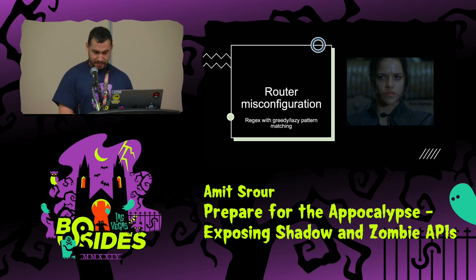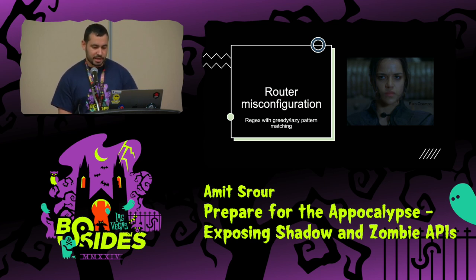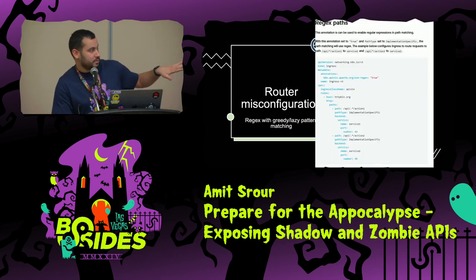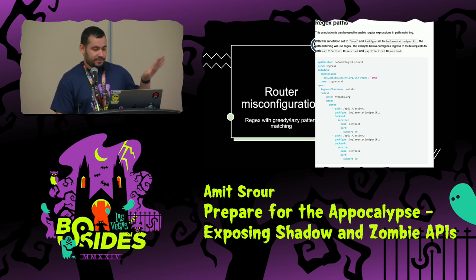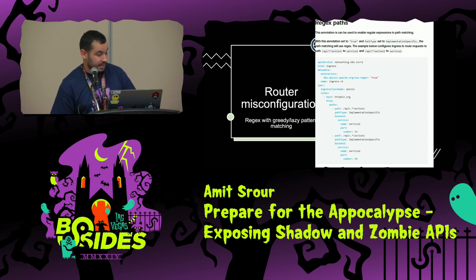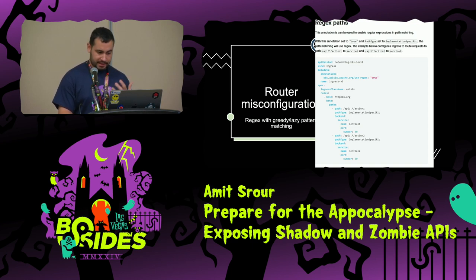Raine, a junior developer, was tasked with configuring the API router. She used a wildcard pattern, meaning anything inputted into the body parameter would pass through to the service. Some endpoints occupying the same path route would also be exposed. This is a misconfiguration.